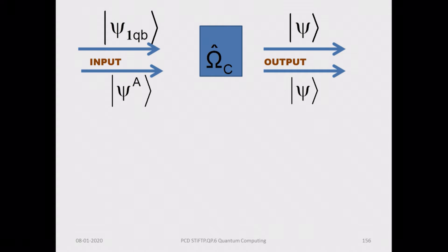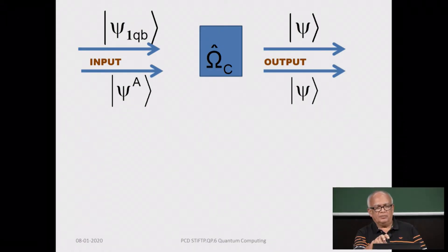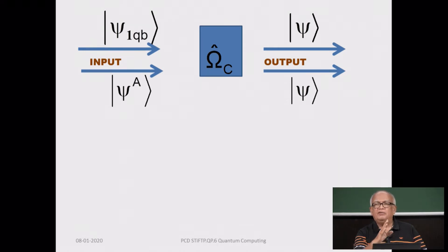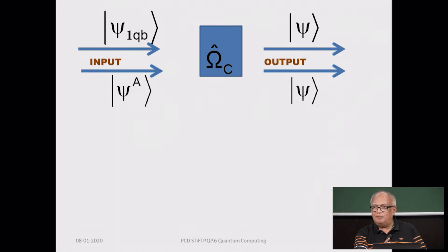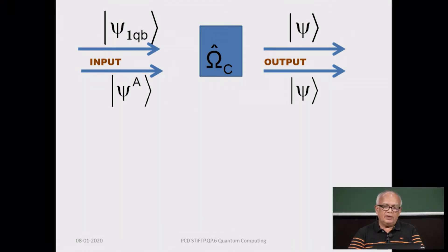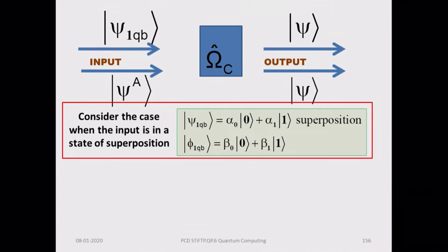We will represent the cloning machine by an operator omega_C which achieves the cloning. You feed in a single qubit into the cloning machine. The process of cloning is represented by the operator omega, which operates on the input state vector. The input is the direct product of what is to be cloned and an ancillary vector. The cloning operator operates on that and gives you the original vector and a copy of the same. These are the two qubits we will attempt to clone — both are in a state of superposition.